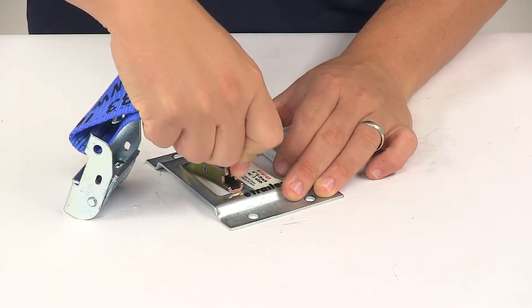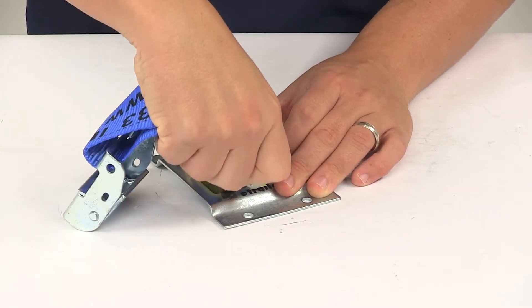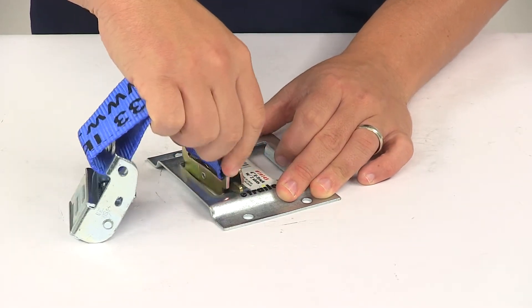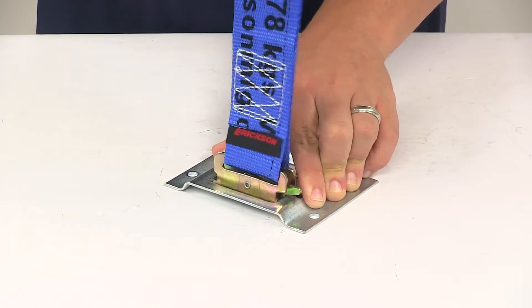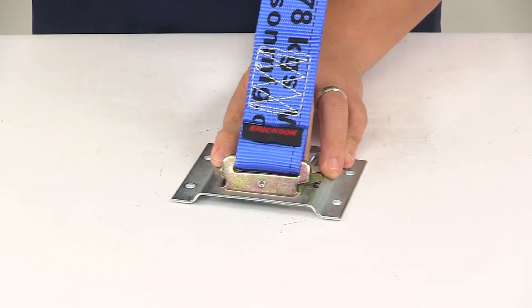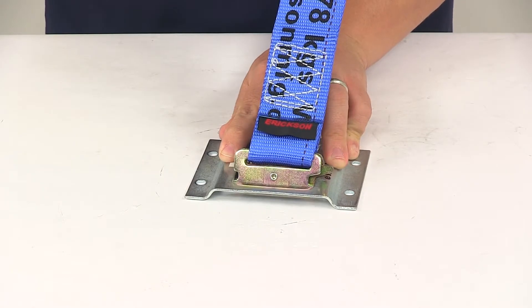So basically you take it, rotate it in, let go of that little lever, and it snaps into place, and the e-track system holds it firmly in the anchor slot.